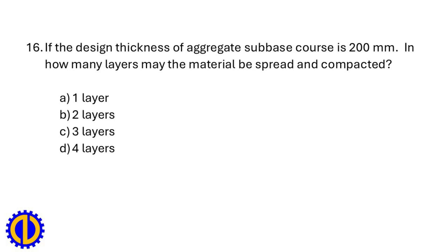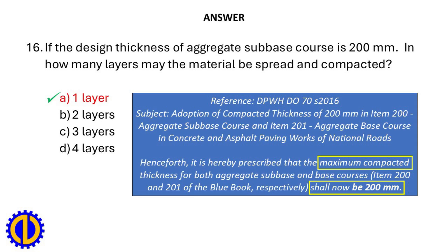If the design thickness of aggregate sub-base course is 200 mm, in how many layers may the material be spread and compacted? a. 1 layer, b. 2 layers, c. 3 layers, d. 4 layers. Answer: a. 1 layer. Reference: DO 072016 — the maximum compacted thickness for both aggregate sub-base and base courses (Items 200 and 201 of the Blue Book) shall now be 200 mm.